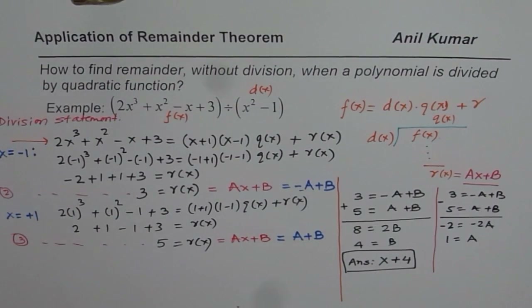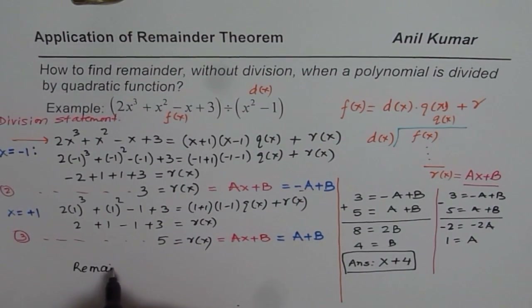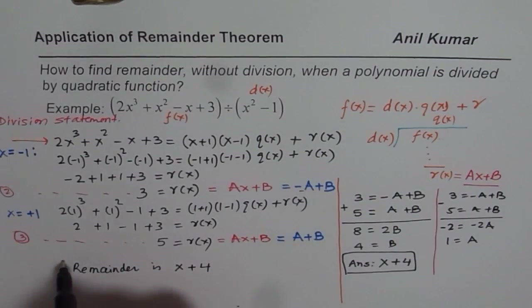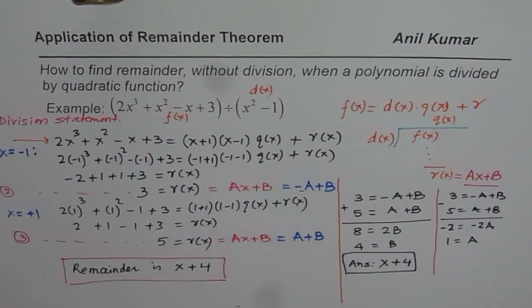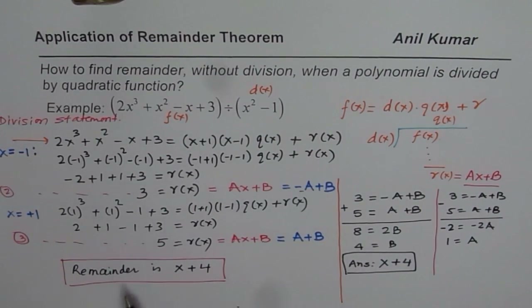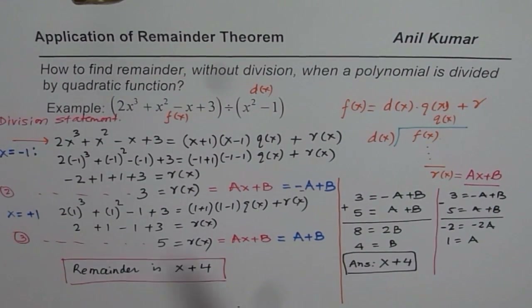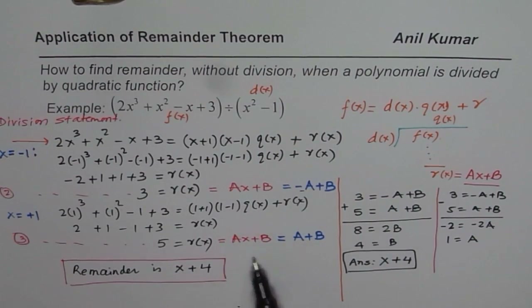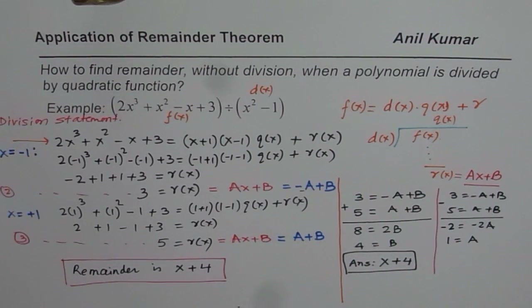So the remainder is x + 4. That is how you solve for the remainder when dividing by a quadratic function, without doing long division. We could have substituted r(x) as ax + b right from the beginning and solved directly. I hope you understand and appreciate the method. We'll have another practice question where we'll do a shortcut. Thank you and all the best.